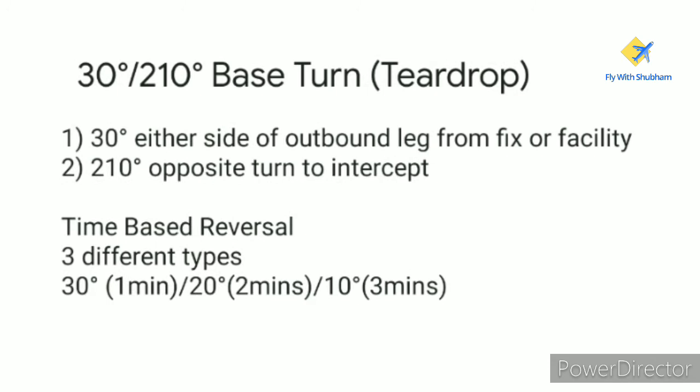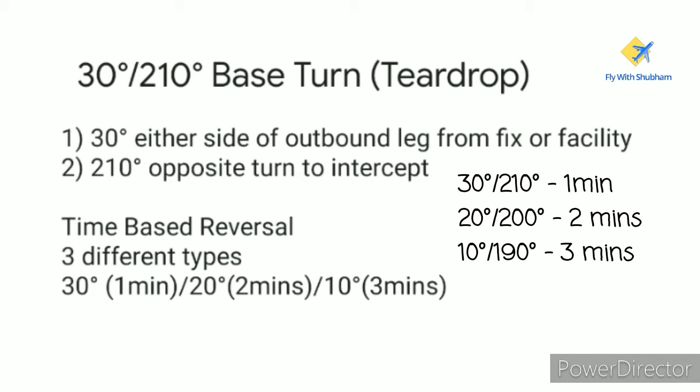There are three different types of teardrop turns conducted based on time. The first is a 30 degree turn with 210 opposite of one minute duration. The second is 20 degrees with 200 degrees inbound of two minutes duration. The third is 10 degrees with 190 inbound of three minutes duration.